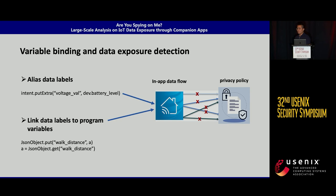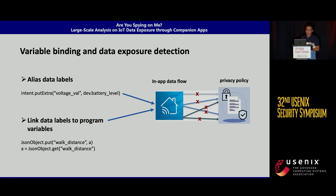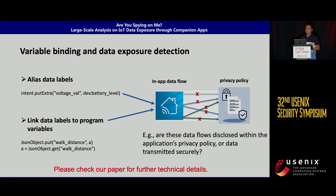After identifying all IoT data points — which are essentially data labels in the application — we use techniques to connect those text labels to in-program variables so we can track them using data flow analysis. We also analyze application assets such as privacy policies to understand whether the data types are disclosed. Using these techniques, we can determine whether data flows are disclosed in privacy policies, and whether data is transmitted securely or insecurely to cloud backends. Please check the paper for further technical details.